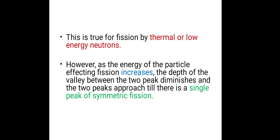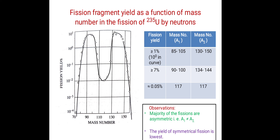If we increase the energy of the particle causing fission — for example, using neutrons or deuterons on uranium-235 — the depth of the valley between the two peaks diminishes and the two peaks approach each other until there is a single peak of symmetric fission. Looking at the plot, this valley is initially deep, but as energy increases, that depth diminishes.